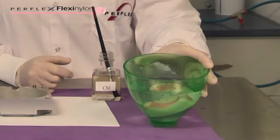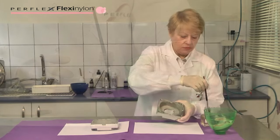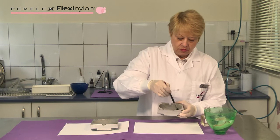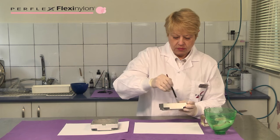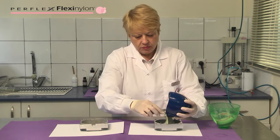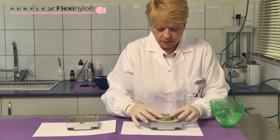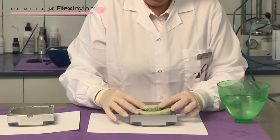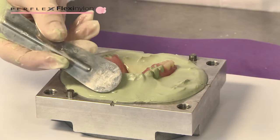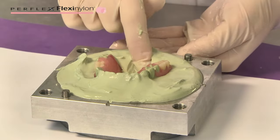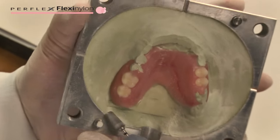Place the waxed model in water. Investing the bottom half of the flask: Take the waxed model out of the water. Spread oil onto the flask and invest the half flask with type 3 plaster. When the plaster hardens, grind the retentive areas of the plaster stone.